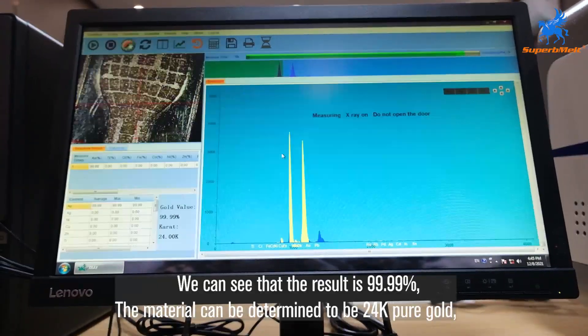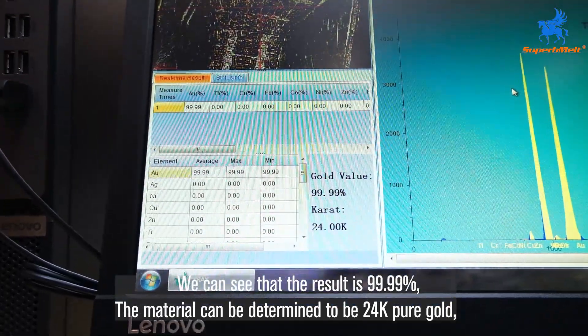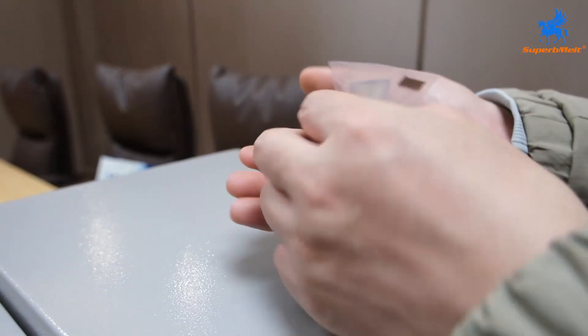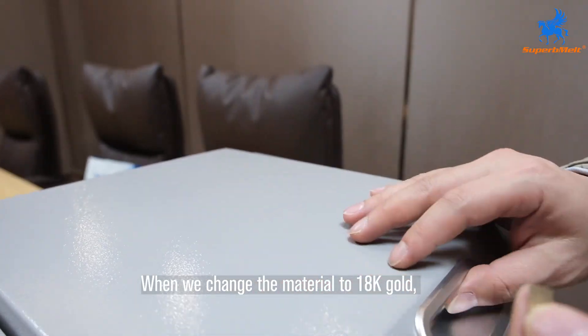We can see that the result is 99.99%. The material can be determined to be 24k pure gold. When we change the material to 18k gold.